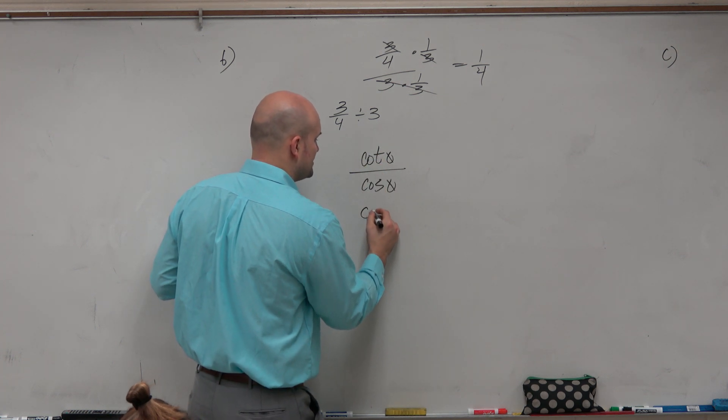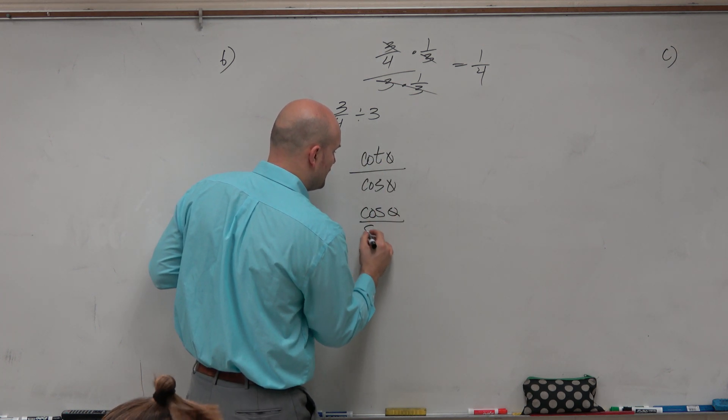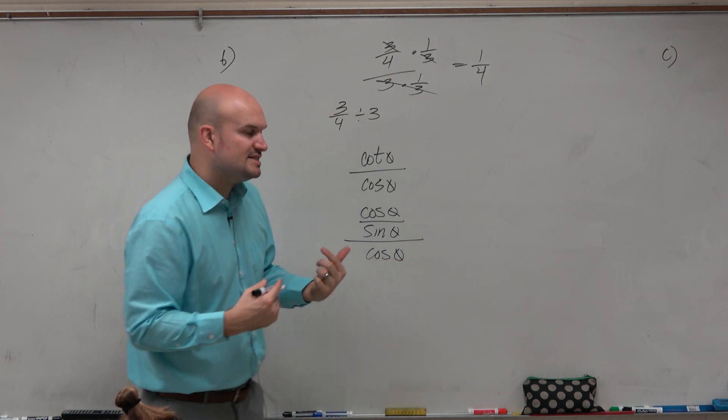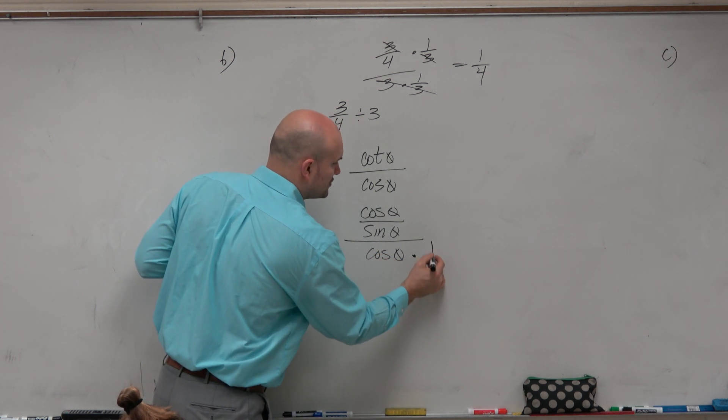So I'm going to rewrite cotangent as cosine of theta over sine of theta divided by cosine of theta. And rather than using secant, I'm going to use 1 over cosine of theta.